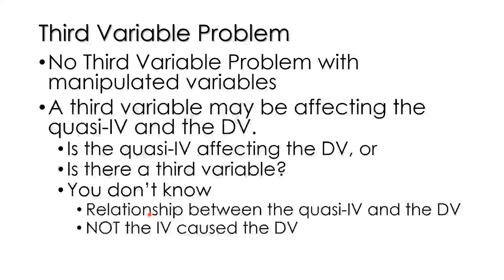This is the third variable problem. There are no third variable problems with manipulated variables. When you manipulate a variable and have comparable conditions, you will not have a third variable problem. What this means is a third variable may be affecting the quasi-IV and the DV at the same time. Is the quasi-IV affecting the DV, or is there a third variable? You don't know, because you haven't manipulated the independent variable.